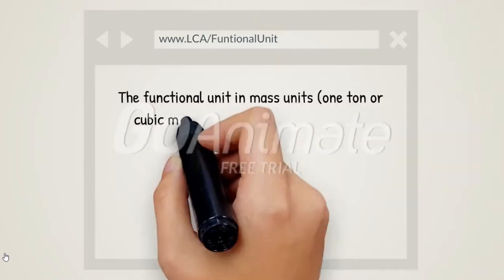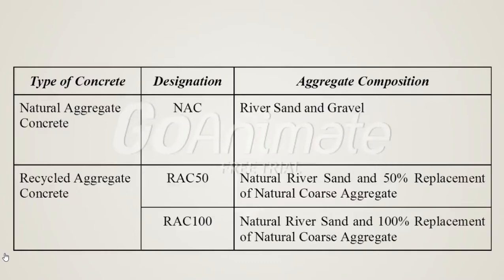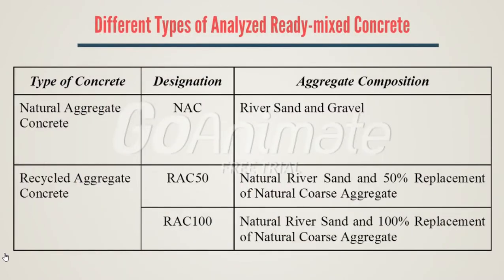The functional unit in mass units — 1 ton or cubic meter of concrete — was chosen by determining the mixed proportions of natural and recycled aggregate concrete to fulfill the same functional requirement of compressive strength. Natural aggregate concrete is designated as NAC, composed of river sand and gravel. The recycled aggregate is designated as REC-50 and REC-100, composed of sand and 50% and 100% replacement of natural coarse aggregate, respectively.